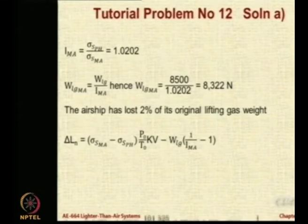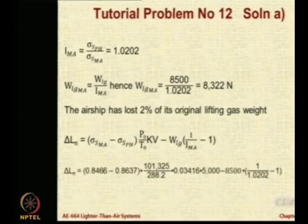So, sigma S MA is 0.8466, sigma S pH is 0.8637, P0 101325, T0 288.16, K is 0.03416, V is 5000 meter cube already given in the question, minus lifting gas weight at ground was 8500 Newtons, 1 upon IMA, IMA is 1.0202 minus 1. So, calculate this number and tell me the value of delta L.